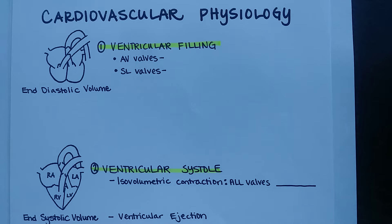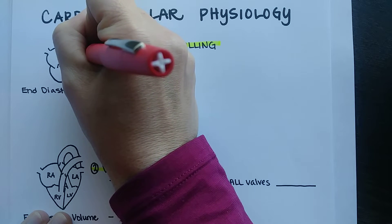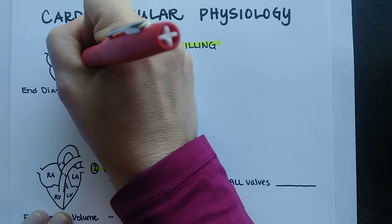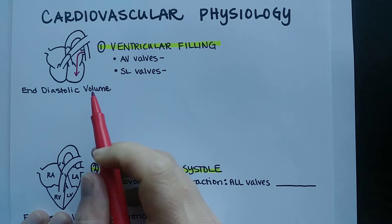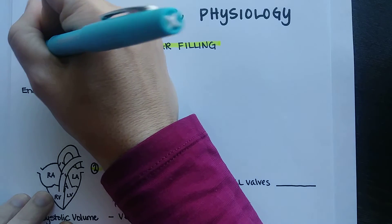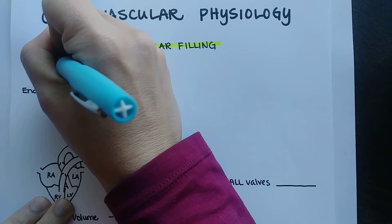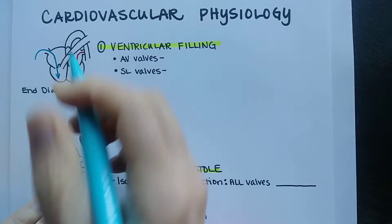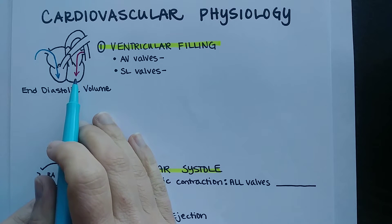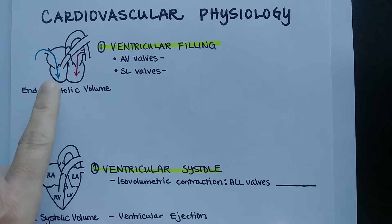Using a red pen, oxygenated blood during ventricular filling comes from the lungs, down through the left atrium into the left ventricle. At the same time, deoxygenated blood from the body — shown in blue — comes in through the vena cava into the right atrium and passes down to the right ventricle. Both ventricles fill simultaneously and reach a total volume called end diastolic volume, which is the same on both sides.